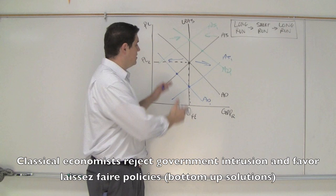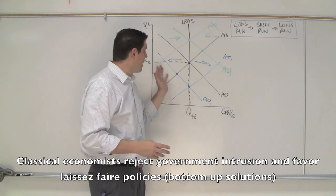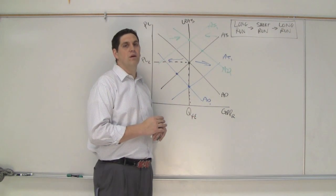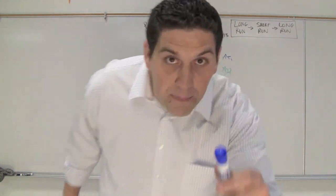On the other hand, the classical theory is don't have the government go deficit spend to try to force this thing to happen. It'll automatically happen if you let markets do what markets do best. Hopefully that makes sense. Until next time.